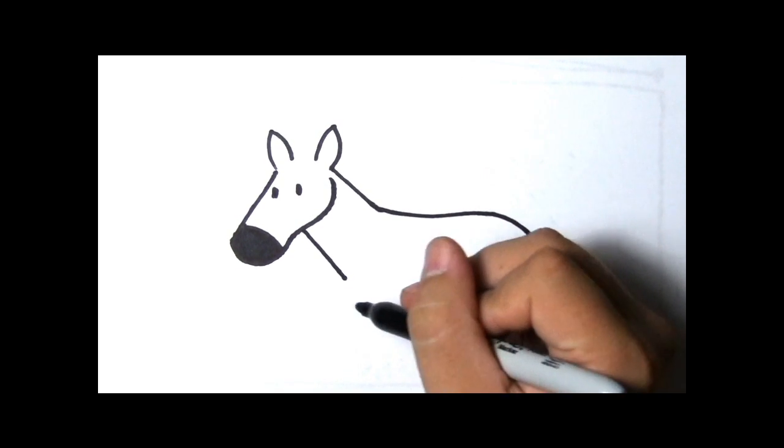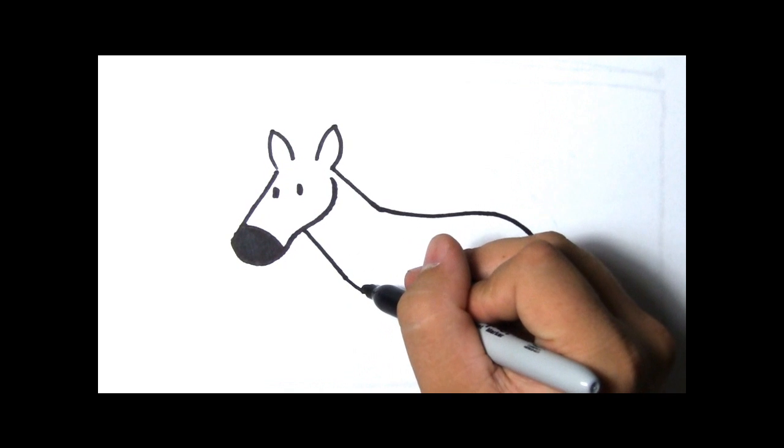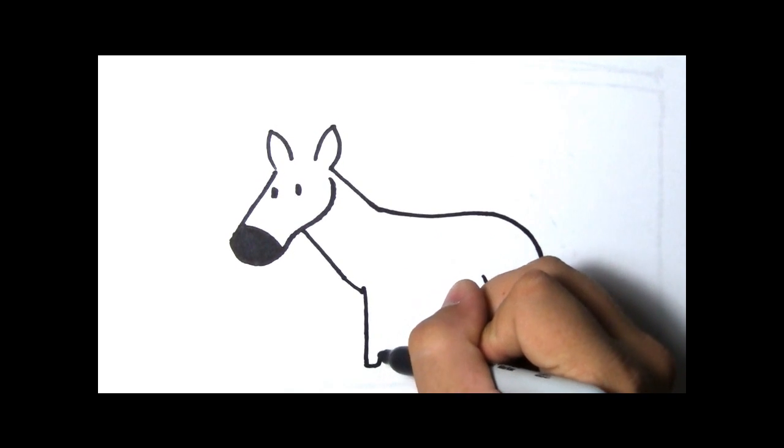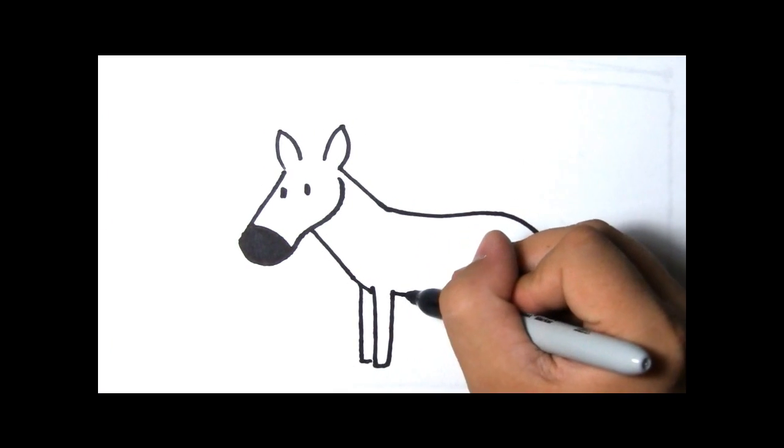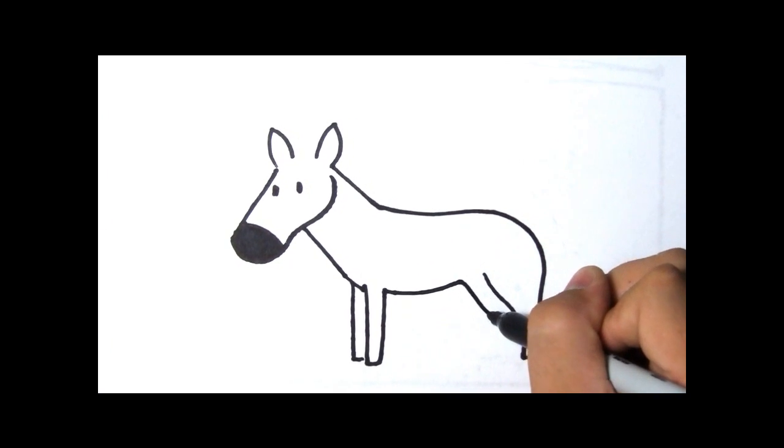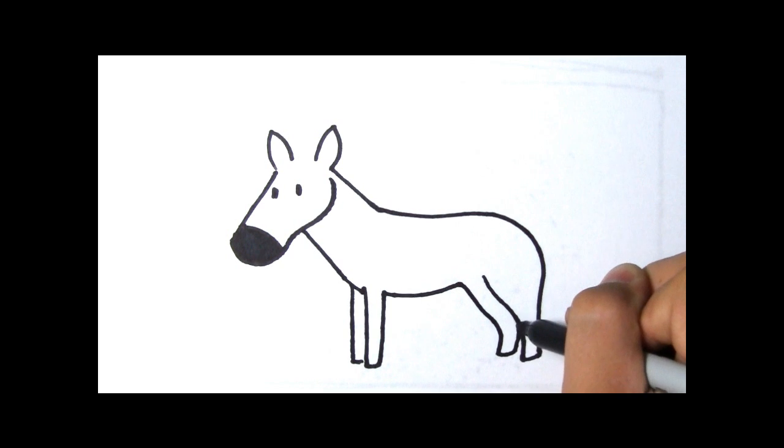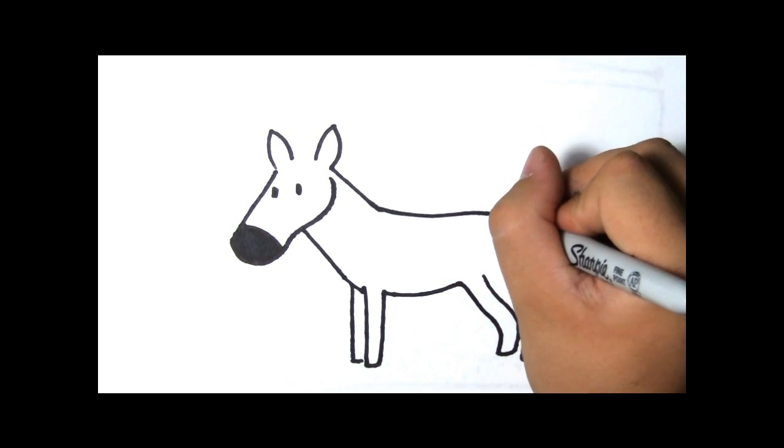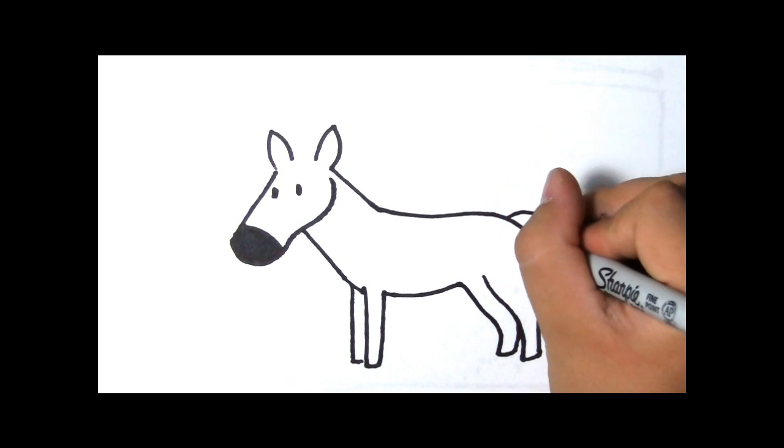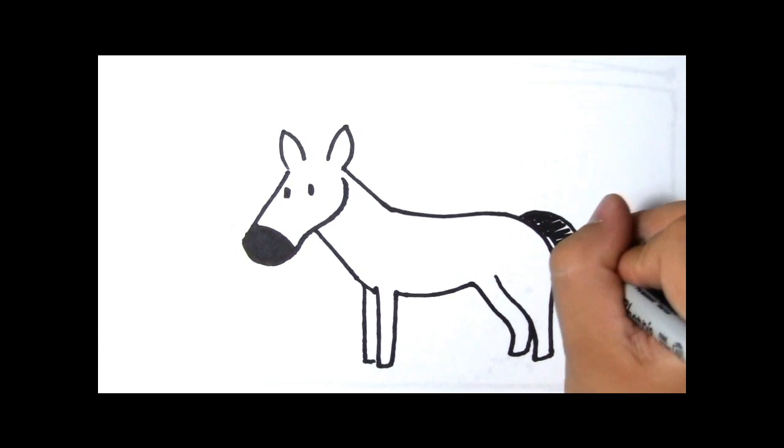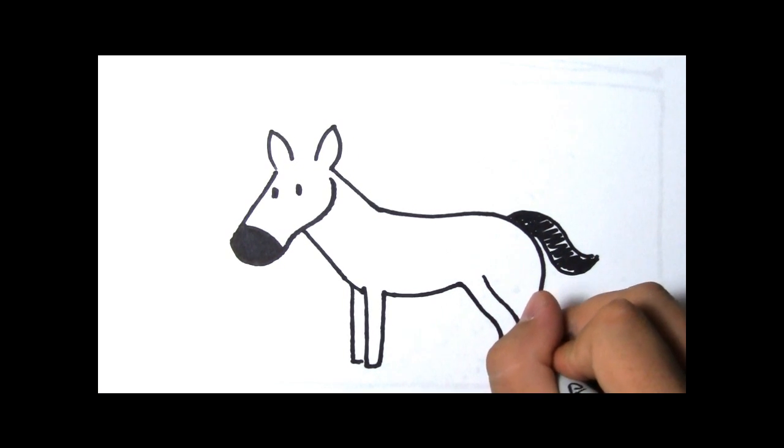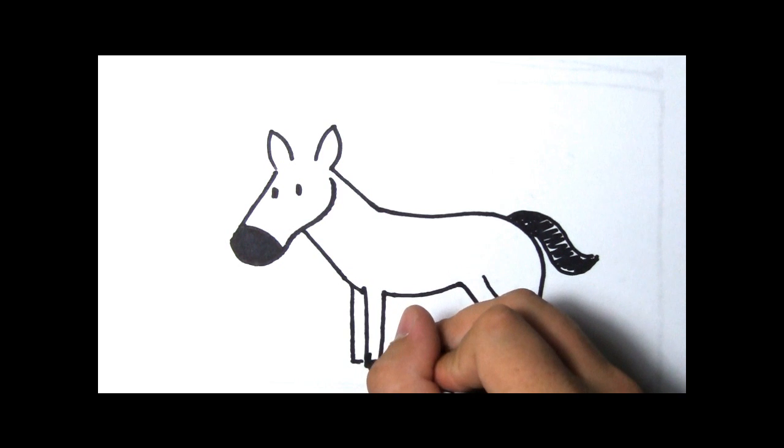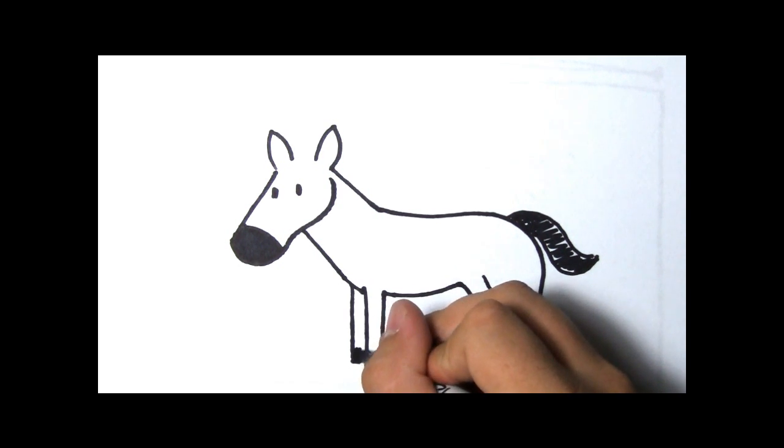Zebras have four legs so we need to remember to put on four legs. Two in the front and two in the back. Zebras also have black tails. Did you know zebras have hooves? Just like horses. They're like hard toes.